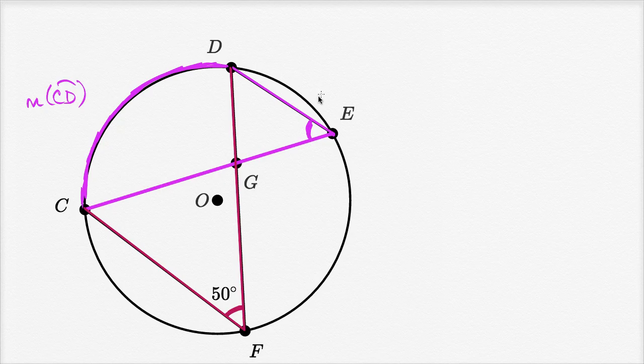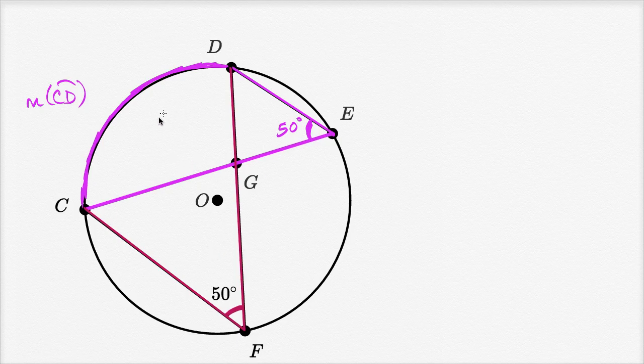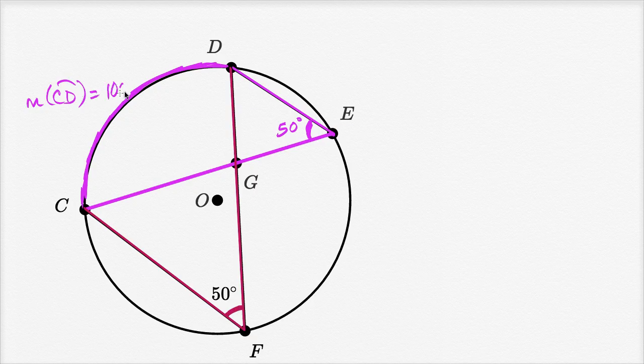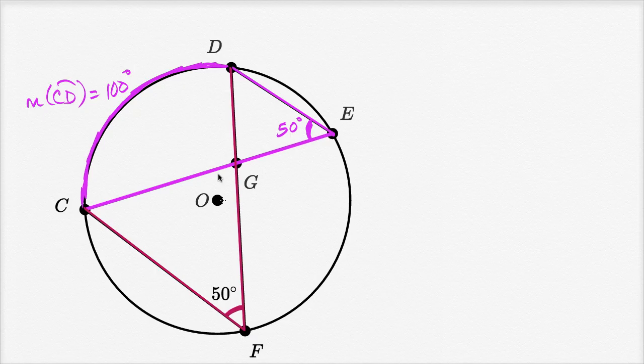So just off of that, you could say that these two angles are going to have the same measure. So you could say this is going to be 50 degrees. Or you could actually solve what the measure of arc CD is. It's going to be twice the measure of the inscribed angle that intercepts it. So the measure of arc CD is going to be 100 degrees, twice the 50 degrees.